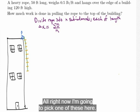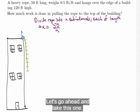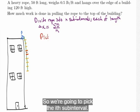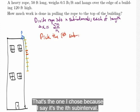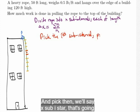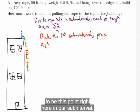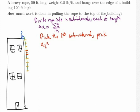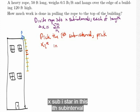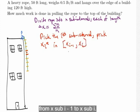Now I'm going to pick one of these here. Let's go ahead and take this one. And I'm going to pick a value right here. So we're going to pick the i-th subinterval. That's the one I chose because I say it's the i-th subinterval. And pick, then, we'll say x sub i star. That's going to be this point right here in our subinterval. x sub i star in this i-th subinterval from x sub i minus 1 to x sub i.